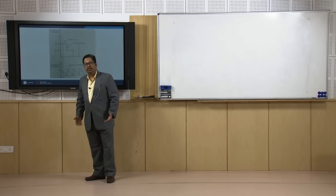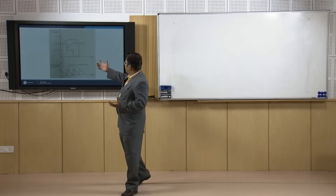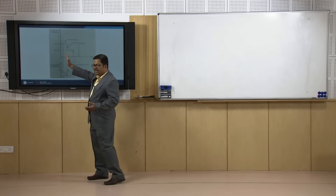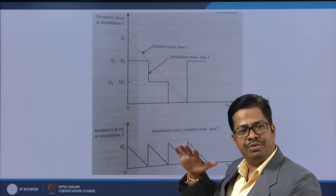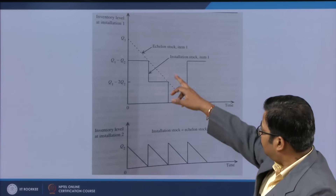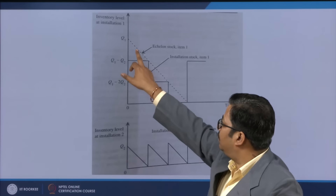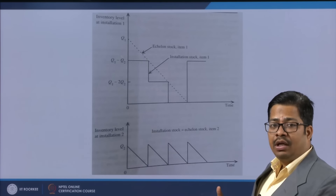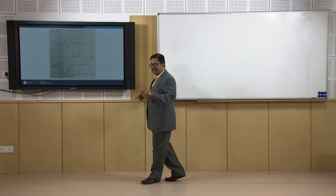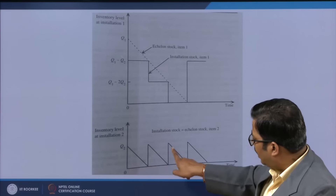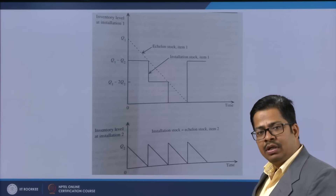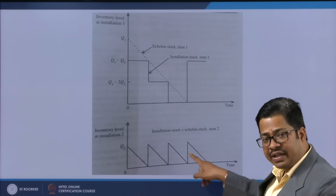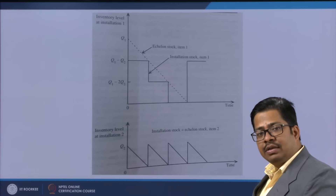We were told that there is a concept known as Echelon Inventory Stocks. The Echelon Inventory Stocks include physical inventory at stage 1 plus physical inventory at stage 2. When we used this Echelon concept in the last session, we saw that we can have dotted slanted lines. The vertical lines represent replenishment stocks — when stock is coming to you — and the slanted lines represent the consumption lines.